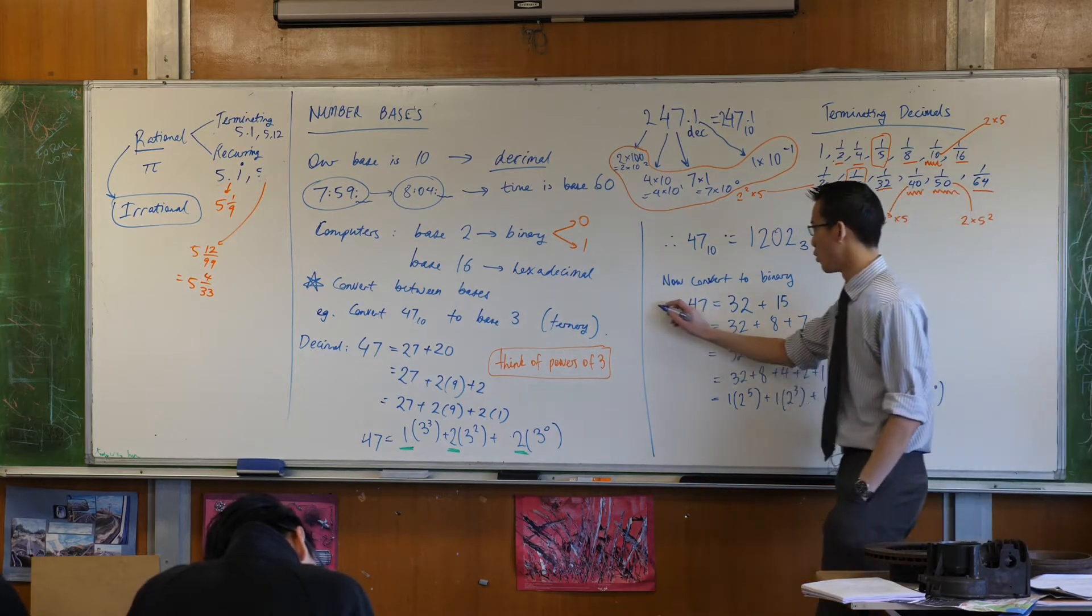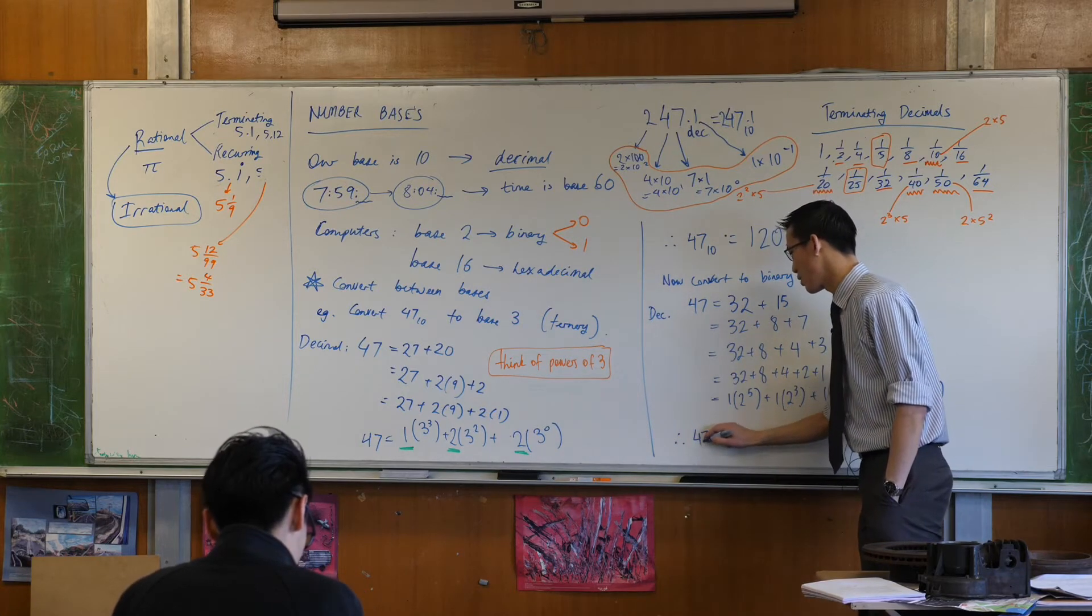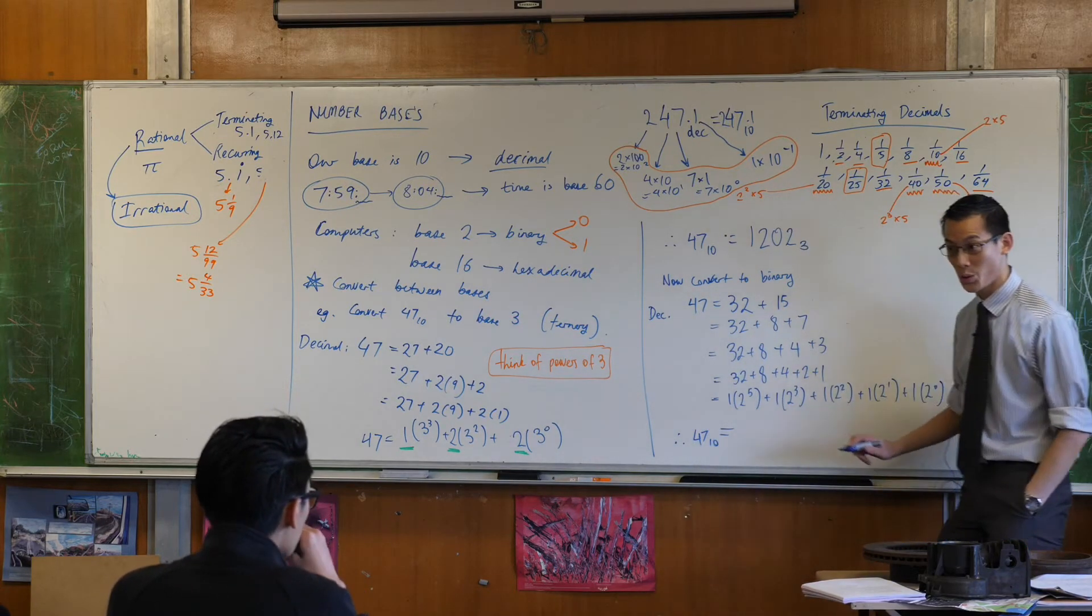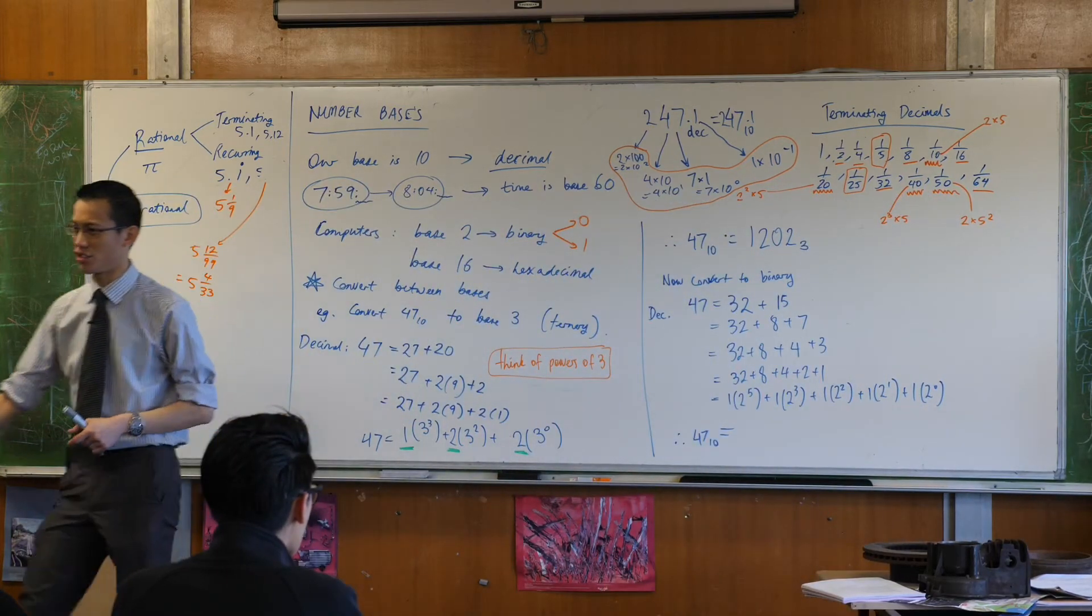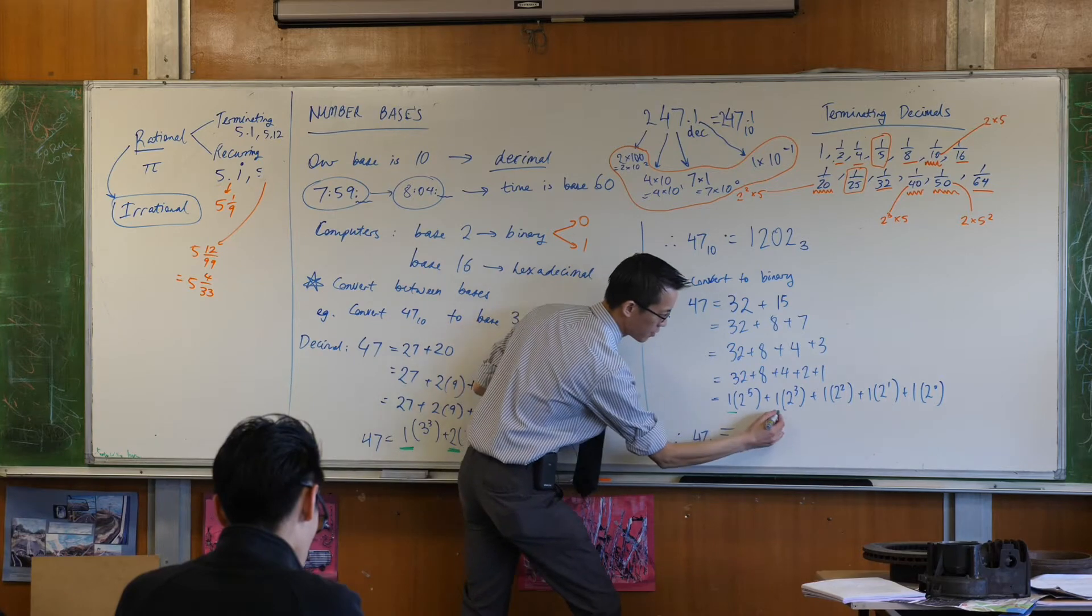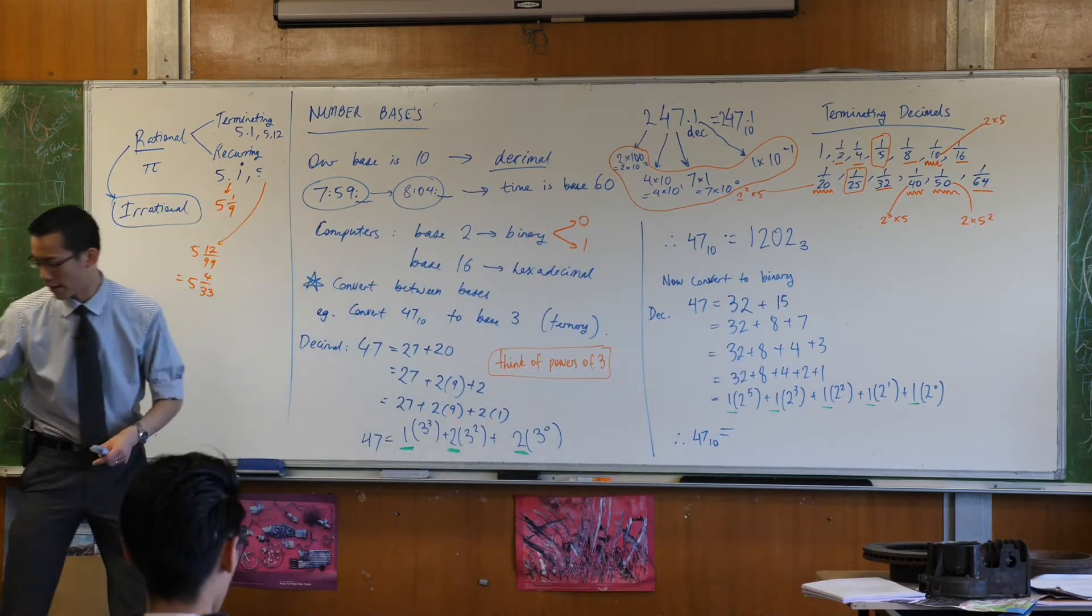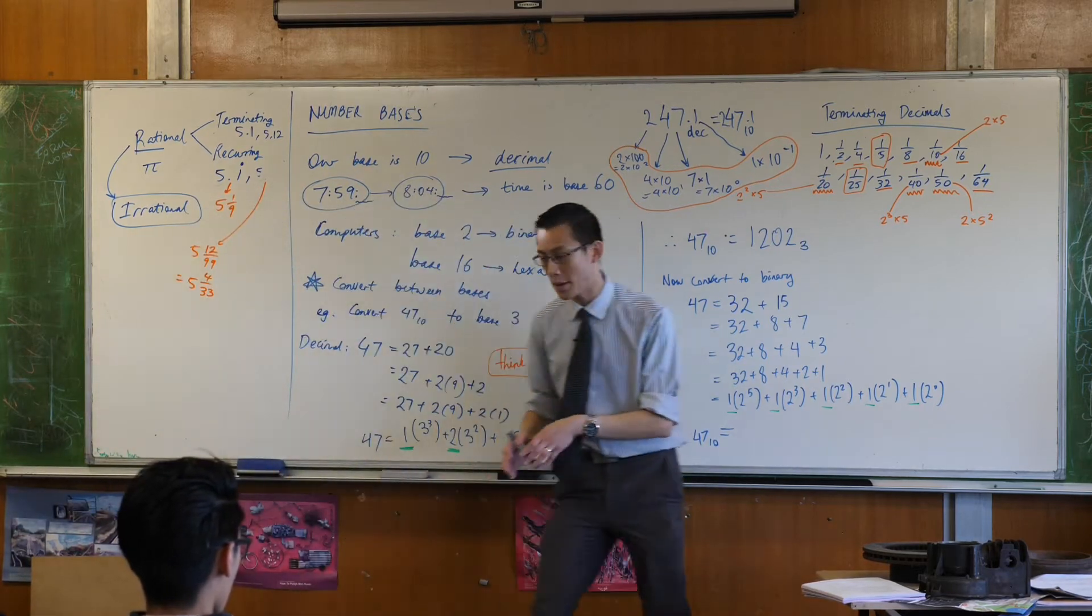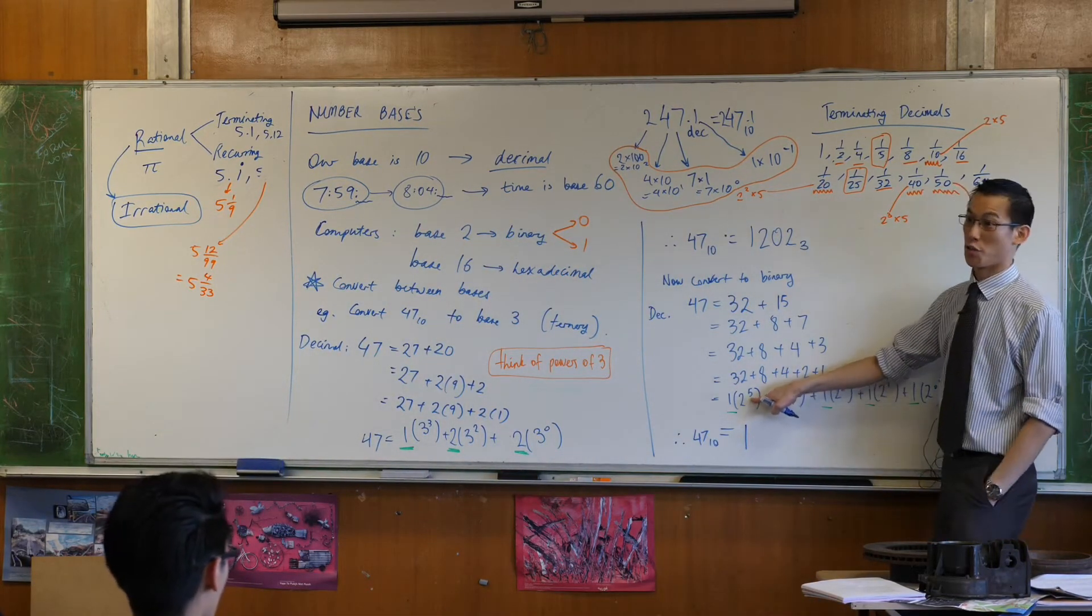So that's all in decimal. So finally, I can say 47 base 10 is equal to... Alright, remember before? Which number are we paying attention to? It's these guys. See those? The ones at the front. So I start from the biggest number, and I go 1.